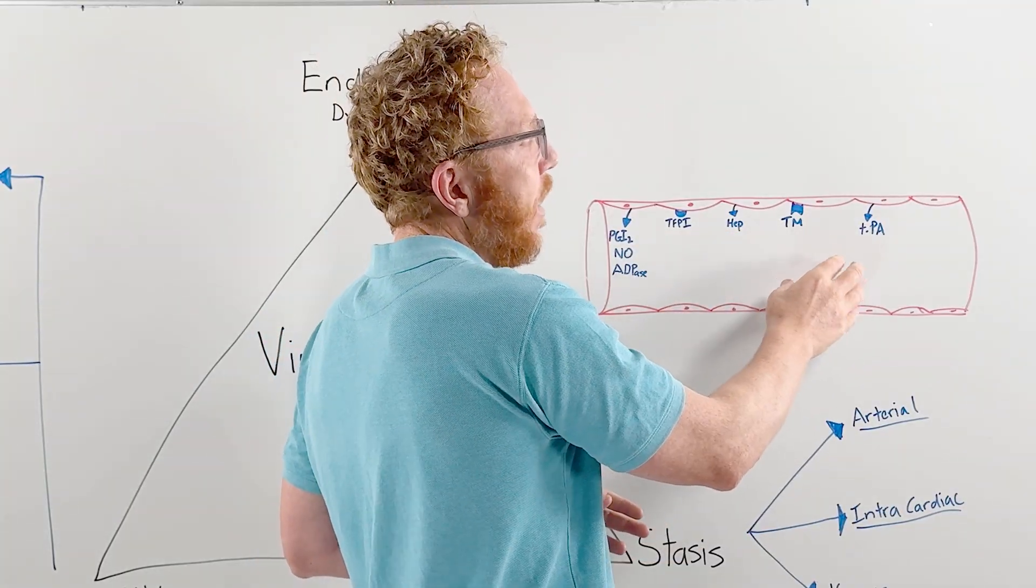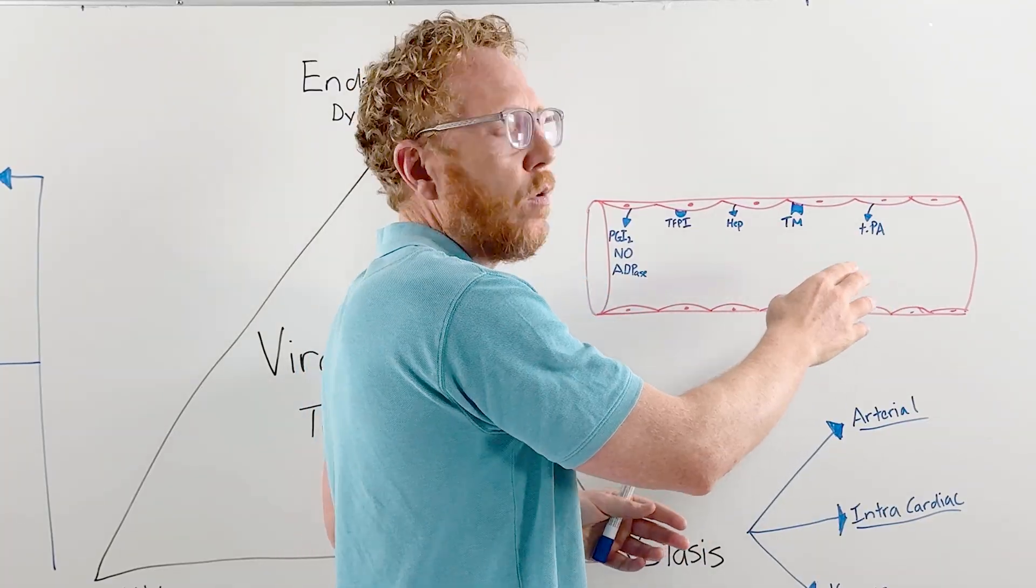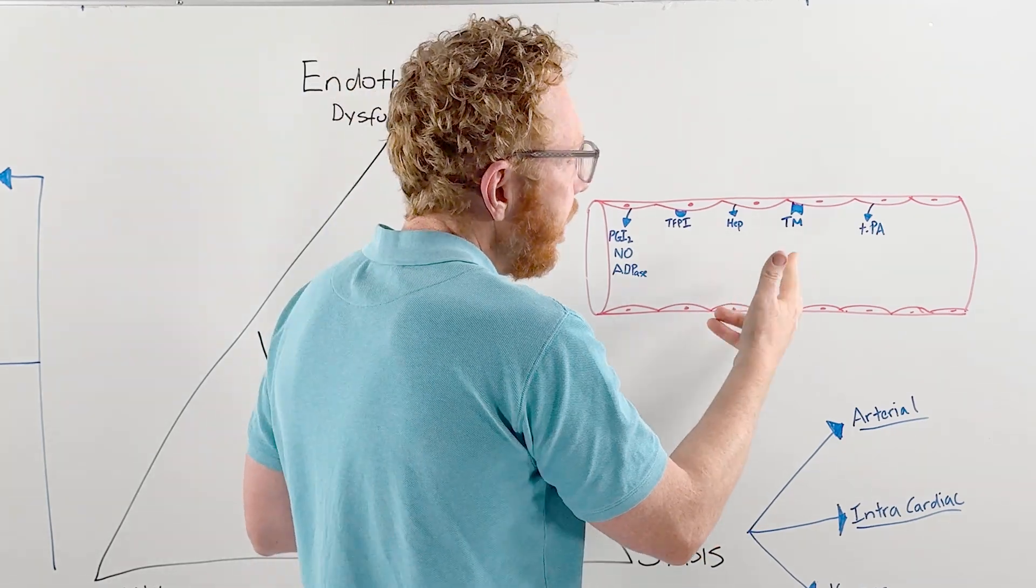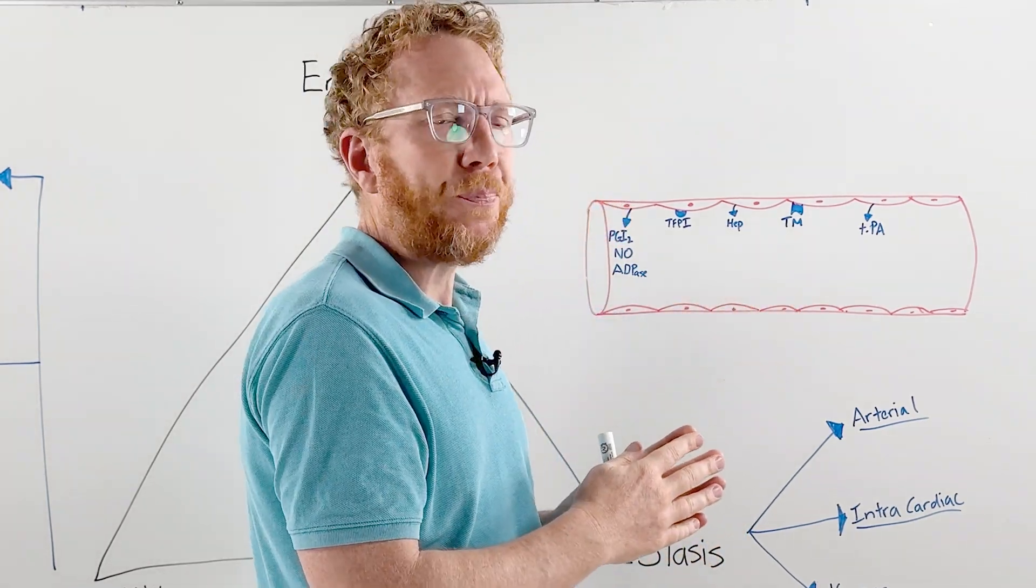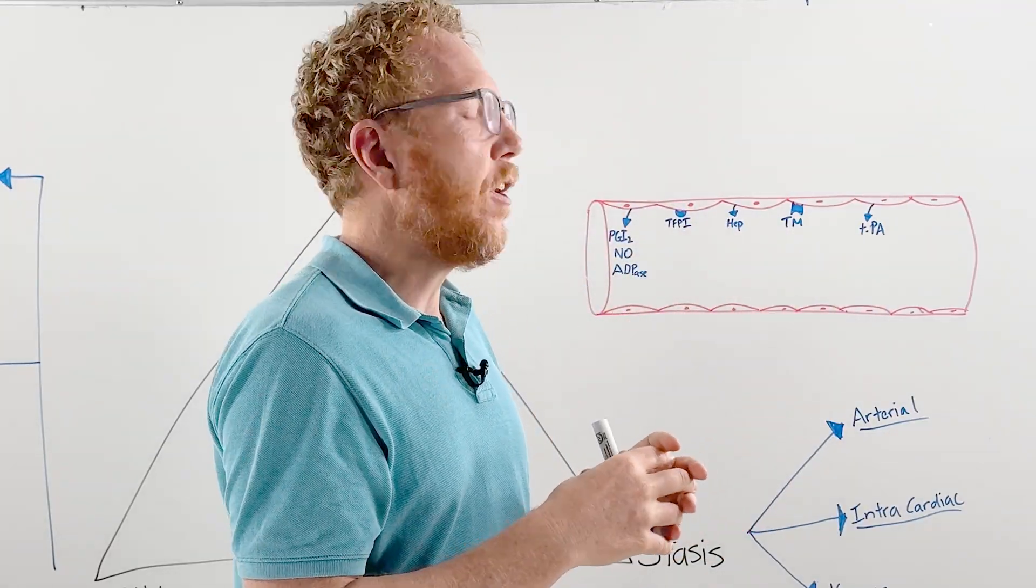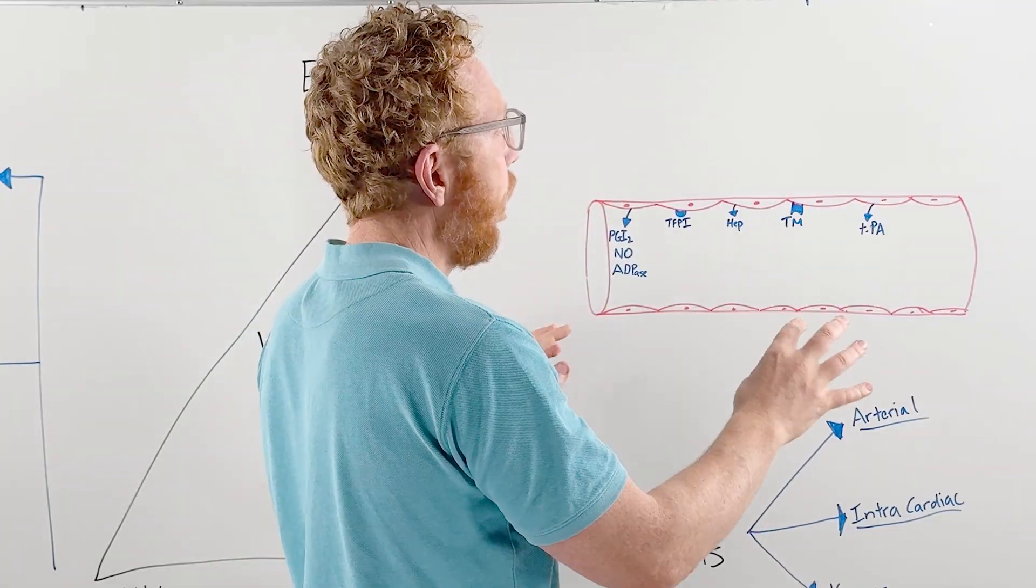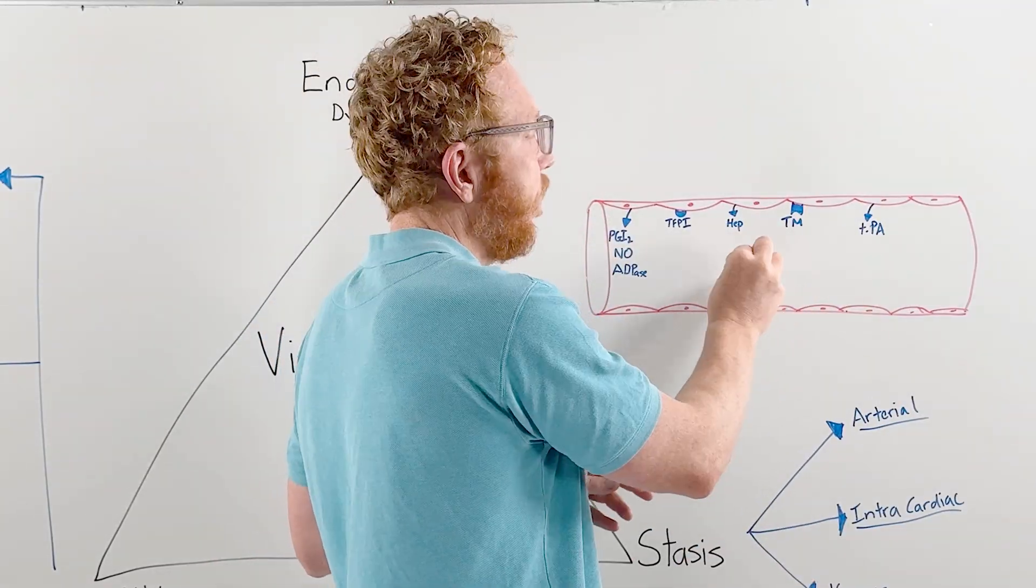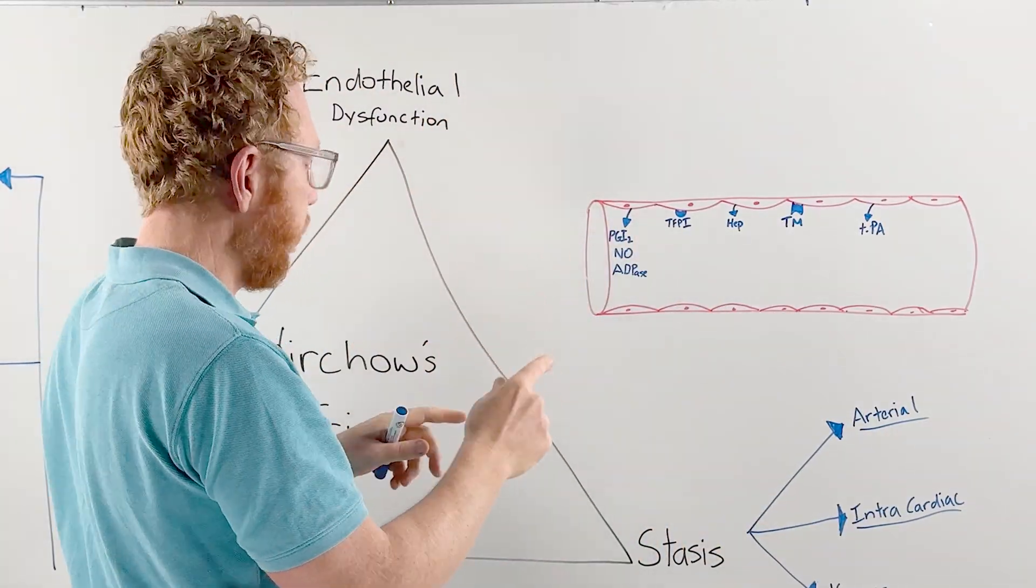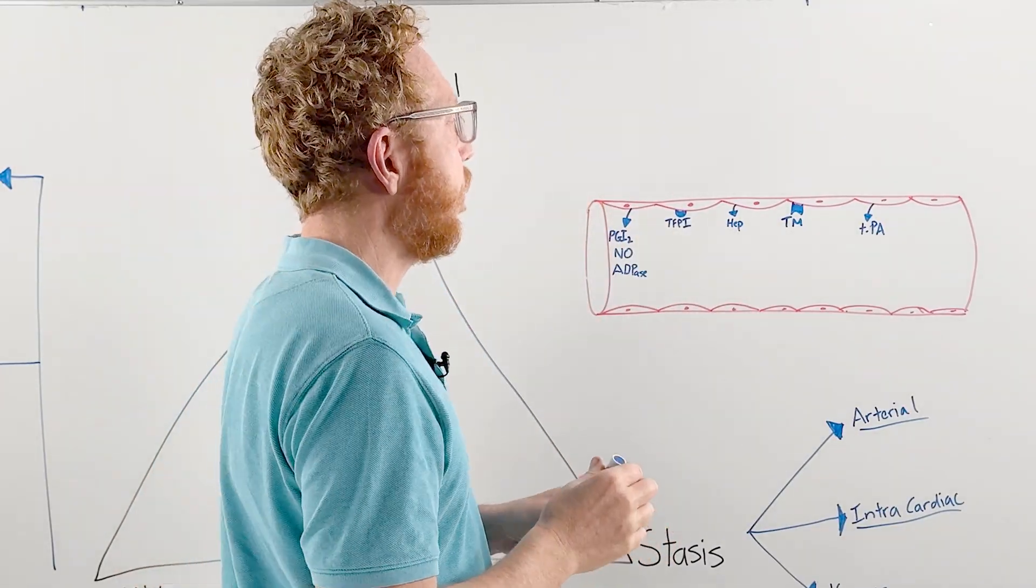The take-home point is these steps the endothelium produces all the time prevent activation of clotting proteins. Finally, if there is a clot, the endothelium releases TPA (tissue plasminogen activator), which goes around chopping up an established clot. So when we have endothelial dysfunction, which is the first part of the triad, we can start to see the possibility of clots forming.